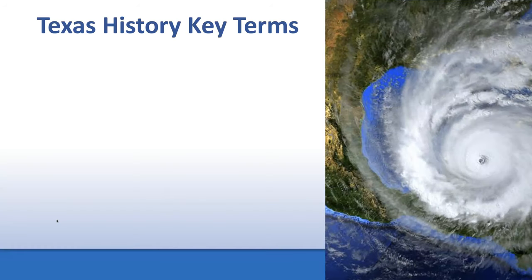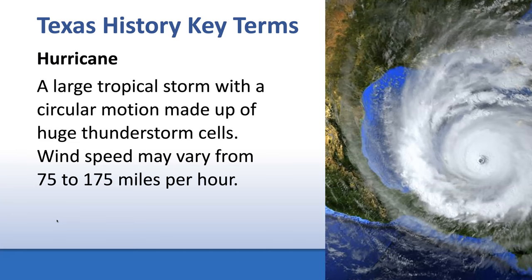First and foremost, let's talk about hurricanes. A hurricane is a large tropical storm with a circular motion, made up of huge thunderstorm cells. It forms over water in the Atlantic Ocean, and as it develops, it begins a spinning motion. What makes a hurricane a hurricane is the speed of the wind — at least 75 miles per hour sustained winds, up to nearly 175 miles per hour. Very devastating, especially when they hit land.